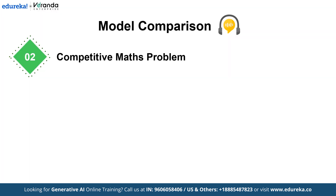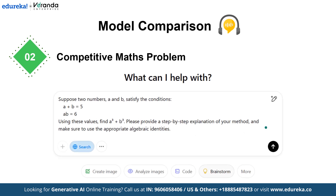Next, we will move on to the competitive maths problem segment. Here's the problem: suppose two numbers A and B satisfy the conditions A plus B equals 5 and AB equals 6. Using these values, find A cubed plus B cubed, and please provide a step-by-step explanation of your method, making sure to use the appropriate algebraic identities. This problem tests the model's ability to manipulate algebraic expressions and explain each step clearly.